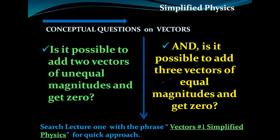Welcome to Simplified Physics. Today we are discussing these conceptual questions: is it possible to add two vectors of equal magnitude and get zero, and is it possible to add three vectors of equal magnitude and get zero? For lectures on vectors, search using the phrase 'vectors has one simplified physics' or 'vectors has two simplified physics'.